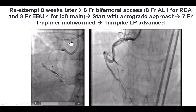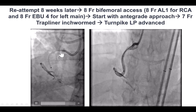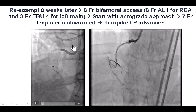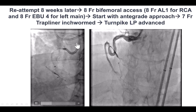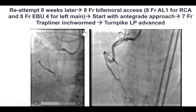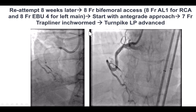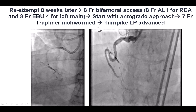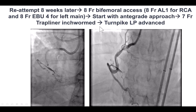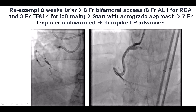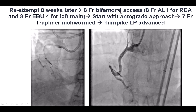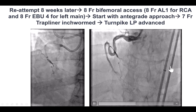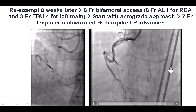This time, we went with a bifemoral axis, because part of the problem the first time was that the guide through radial axis engaging the left main did not give us enough support. Now we had bilateral eight French with long 45-centimeter guides.